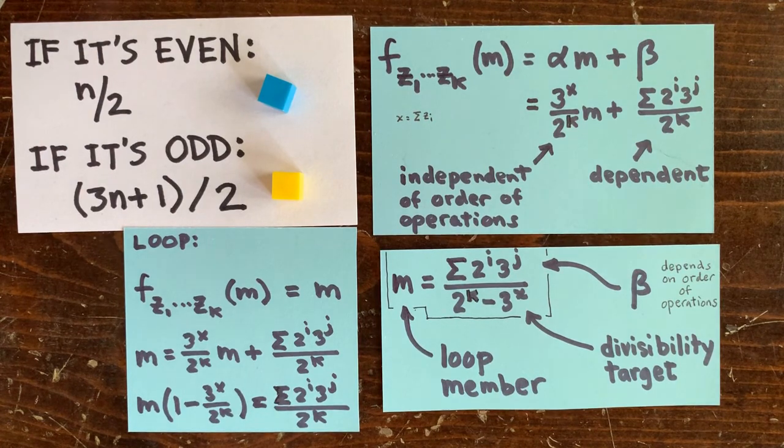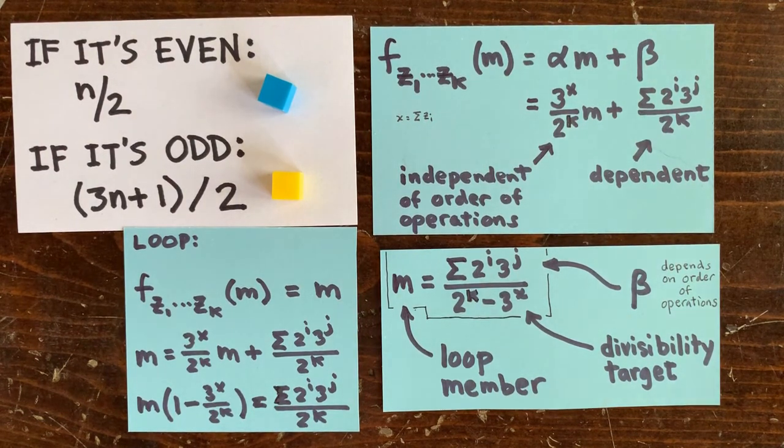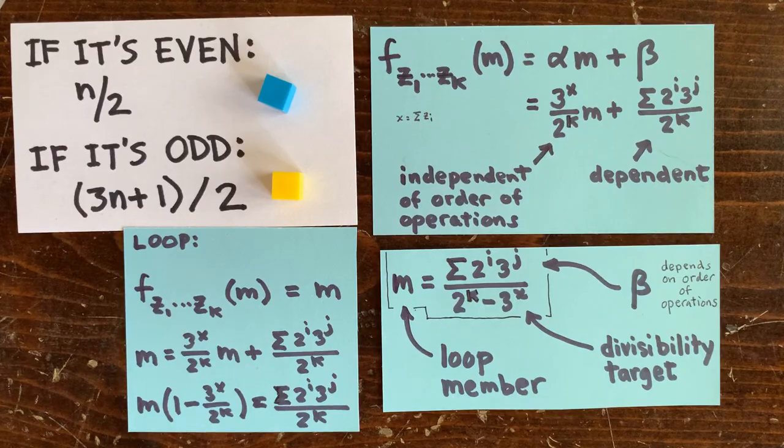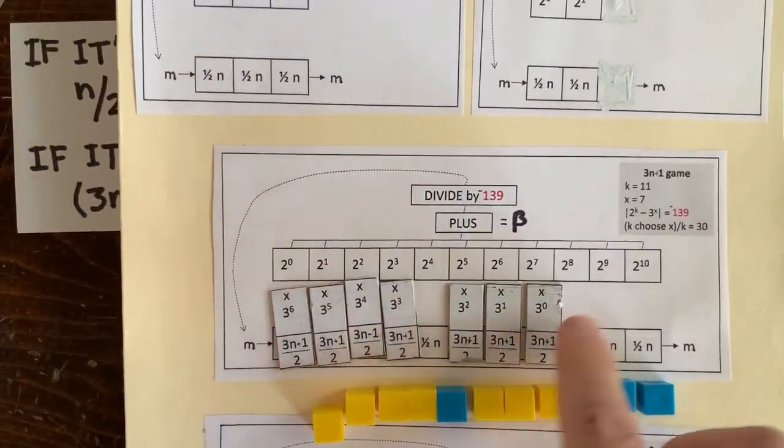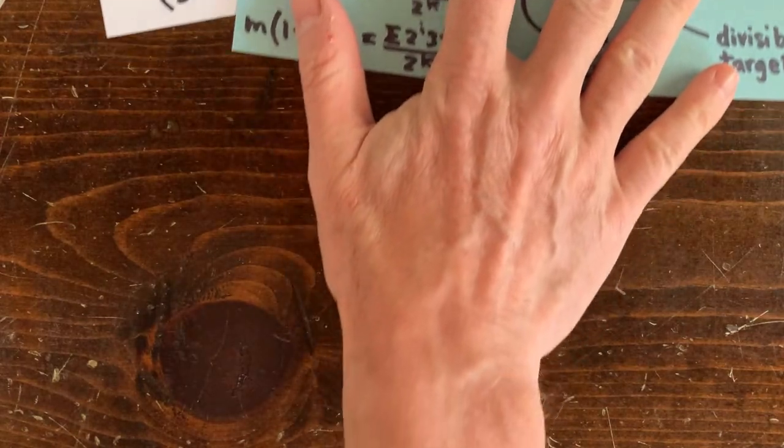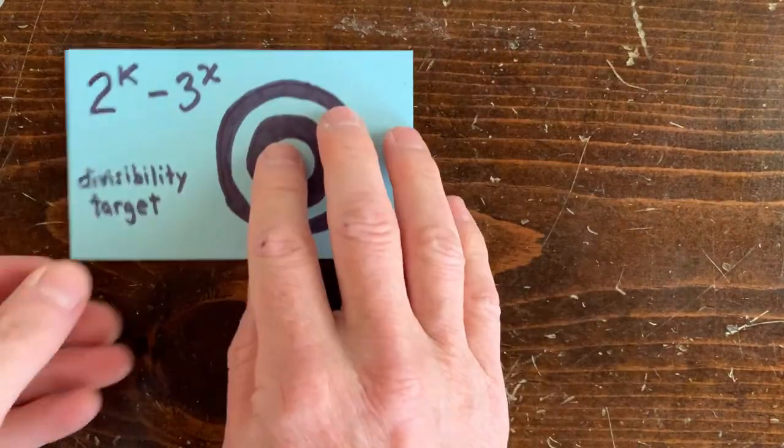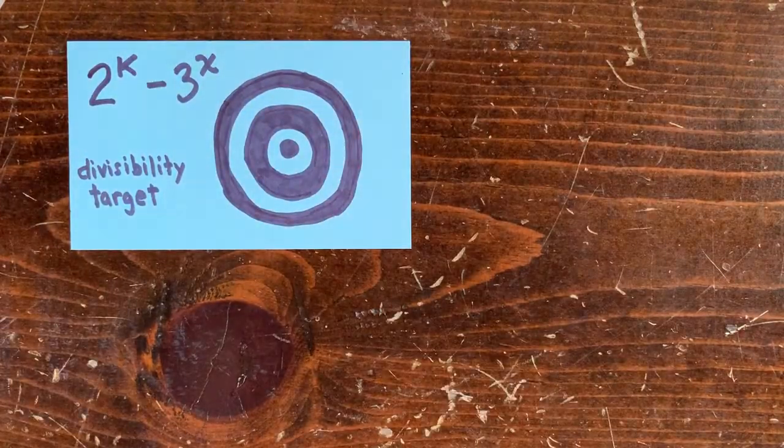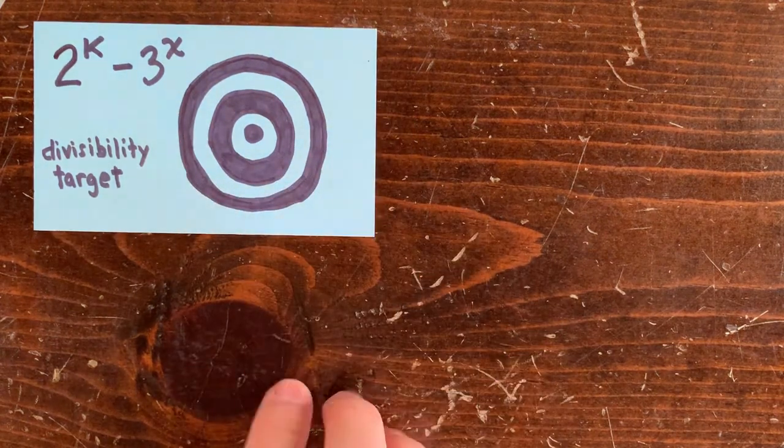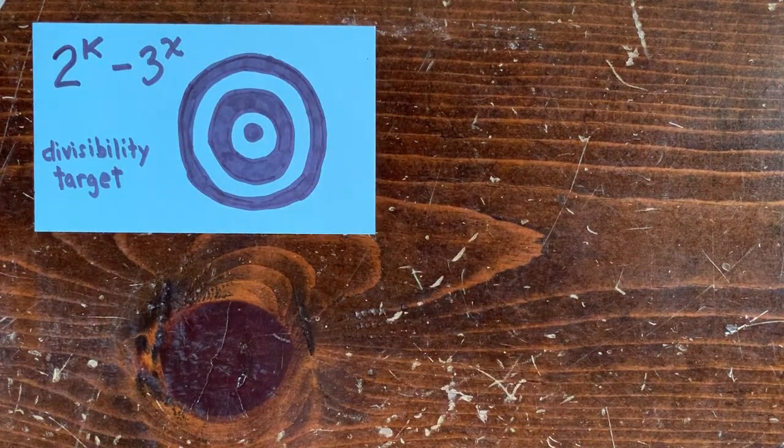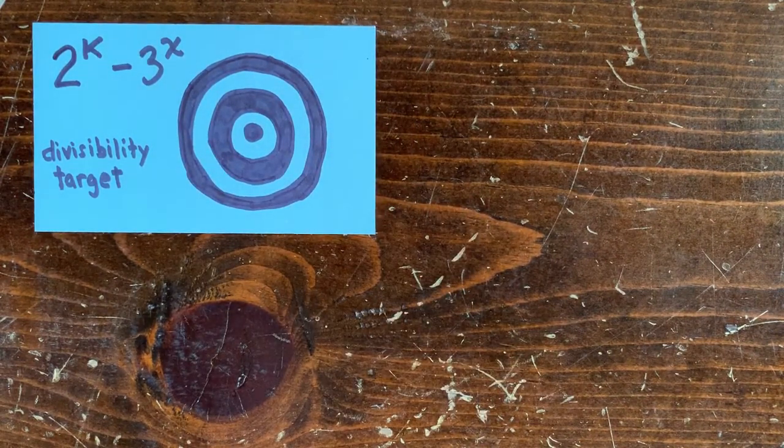All this computer does is tell us for a given operation sequence, which powers of 2 to multiply by which powers of 3. So a particular choice of k and x gives us two things. First, 2 to the k minus 3 to the x, which is a divisibility target. Unlike a regular target, this target, the smaller it is, the easier it is to hit.